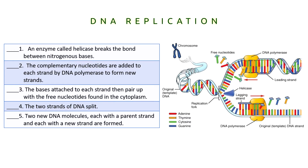In the next activity, you will arrange the following events in DNA replication using letters A to E, given the diagram and the set of events that happen in DNA replication. For example, if you think the first step is number 1, you will write letter A on the space before number 1. If you choose number 5 as the last step, you will write letter E on the space before number 5. Please start answering.